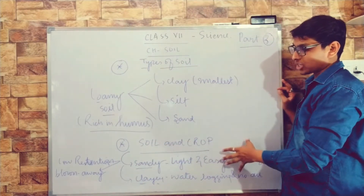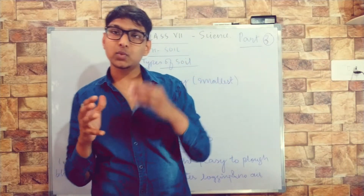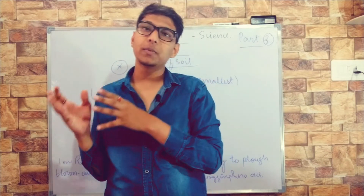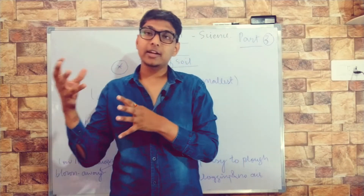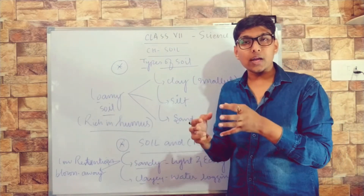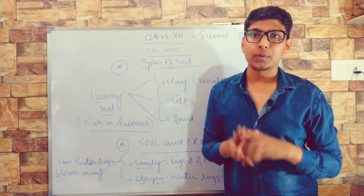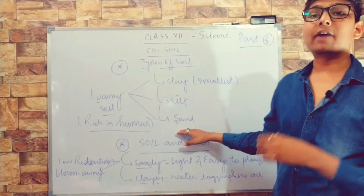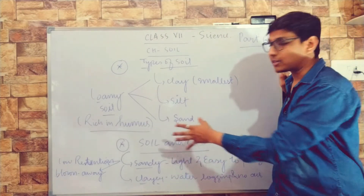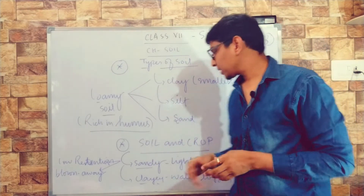Now coming to the next part: soil and crop. Different crops need different types of minerals. That's why some fruits we get from certain parts of India — like Kashmir grows apples which we are not able to grow in UP. So different temperature, type of soil, and mineral availability — so many factors determine the type of crop or food produced at a particular place. Soil also has different textures and different mineral constituents, so we can say that soil and crop are interlinked in terms of specificity.